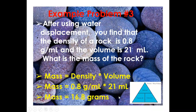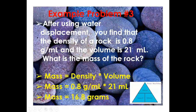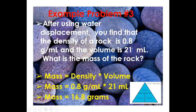Third problem: after using water displacement, the density of a rock is 0.8 g/mL and the volume is 21 mL. To find mass, use: Mass = density × volume = 0.8 × 21 = 16.8 grams.